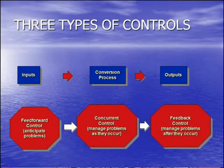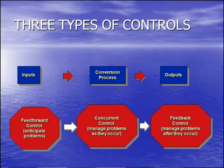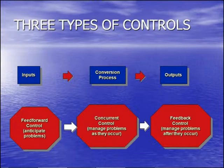As you know, there are three types of control systems: input, conversion process, and outputs. When we talk about inputs, it's basically feed forward control which anticipates the problems. In the conversion process, there is concurrent control which manages problems as they occur. And as outputs, we have feedback control which manages problems after they occur.